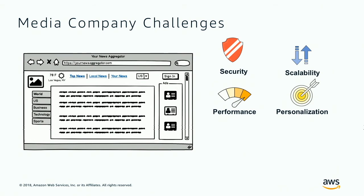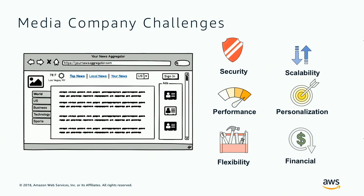Flexibility is also a concern — great content management systems come with themes that are tightly coupled to the data structure, creating limitations. How do you break free from that? Financially, the most important thing for our media company is to continue doing high-quality journalism while also making sure they can convert visits into actual money. These challenges are real and not unique to this media company — you could apply them to any enterprise web solution.